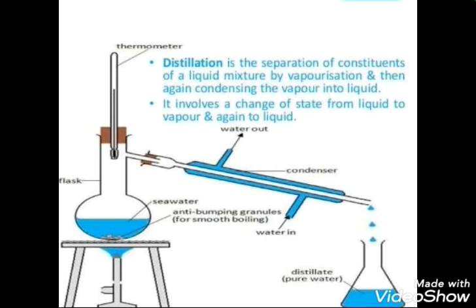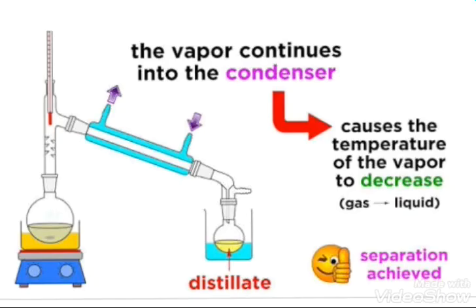Now let's see how we do the activity. First, we supply heat. As we supply the heat, the sea water gets boiled and converts into vapor. This vapor passes through the condenser, which changes the vapor back into liquid. In the distillate, pure water is achieved — separation is complete. Thank you.